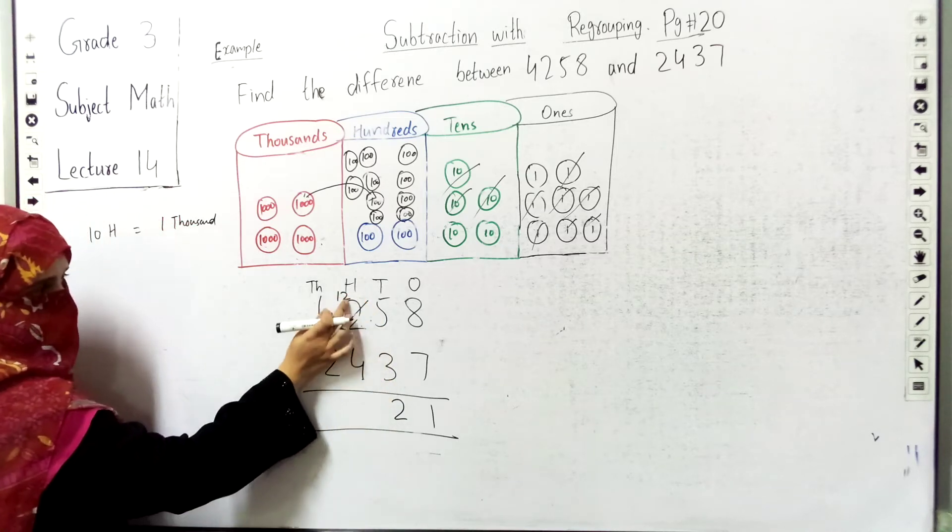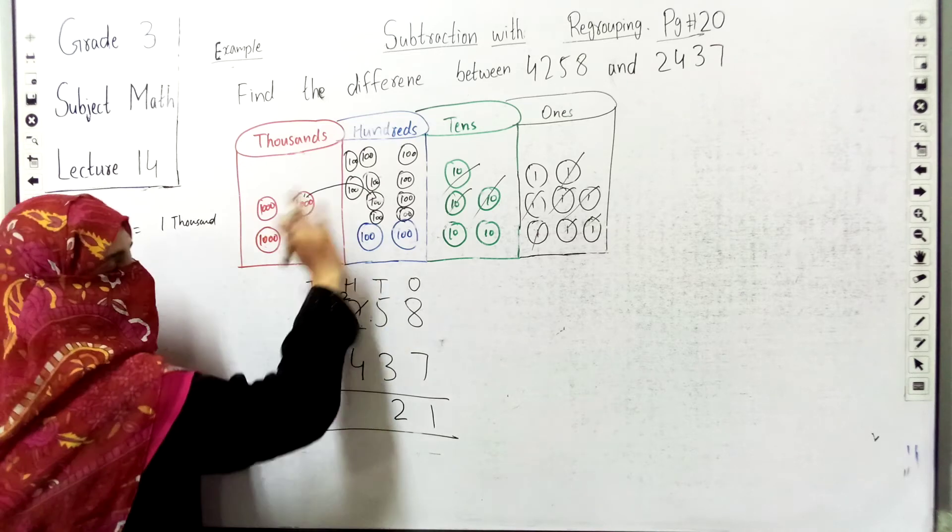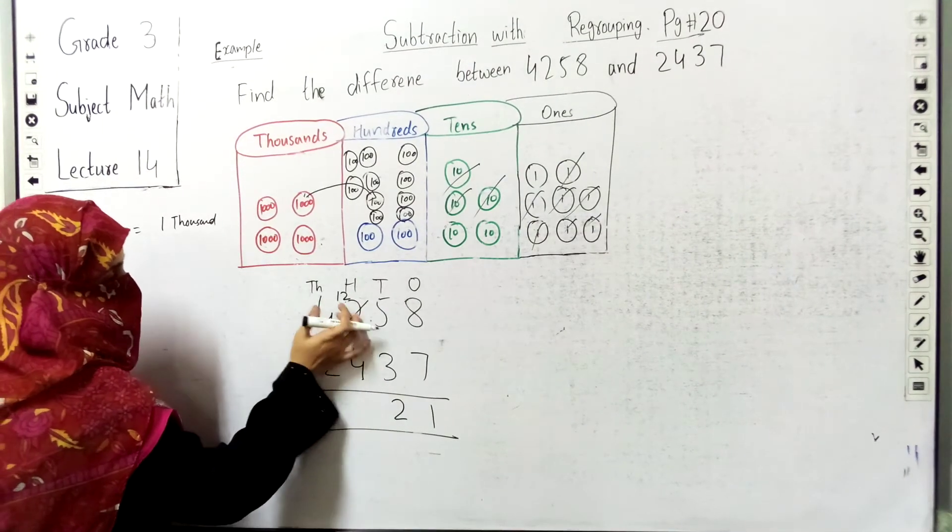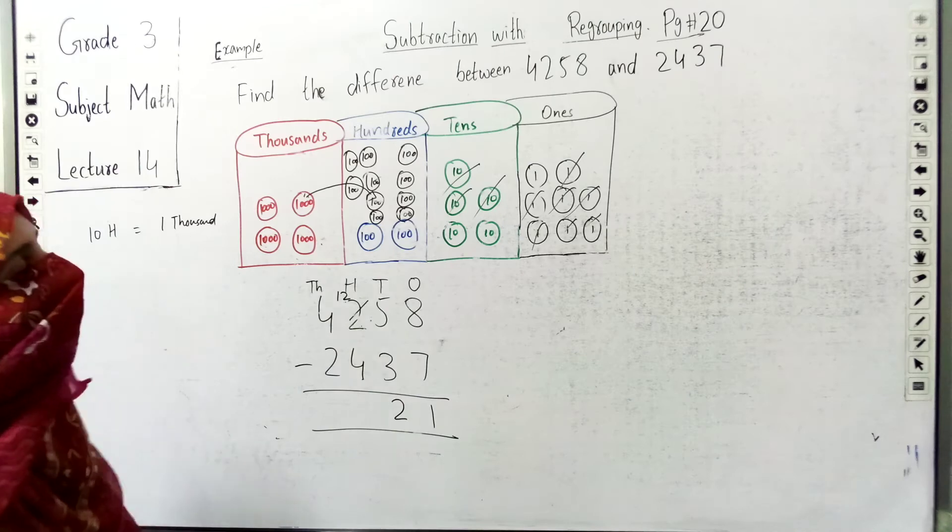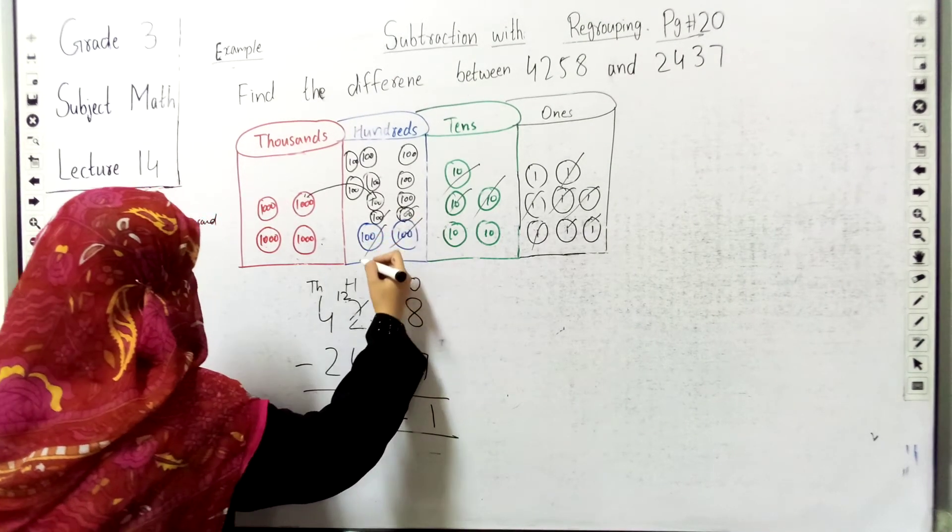We will cross out the 2 and write 12. One from here we take to the place value table. So we have 2 in the hundreds place, but we took 1, so now it's 12. We have 12 hundred, and we need to minus 4. So 12 minus 4 equals 8.